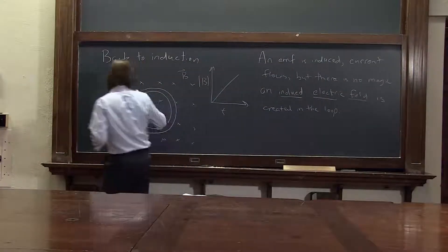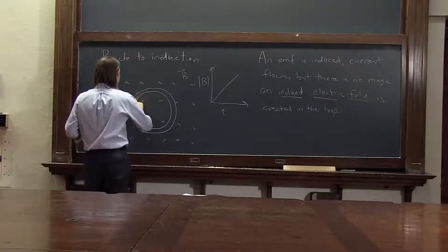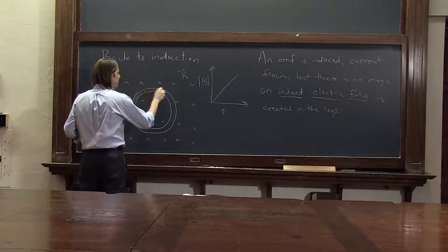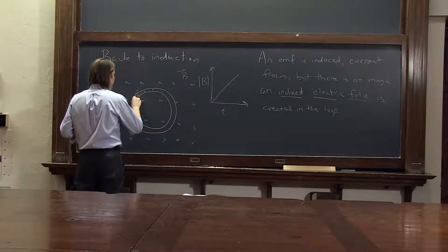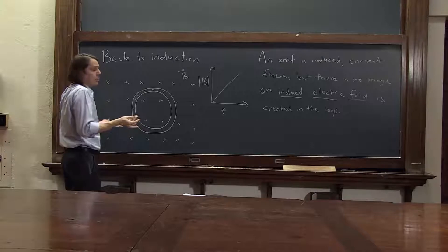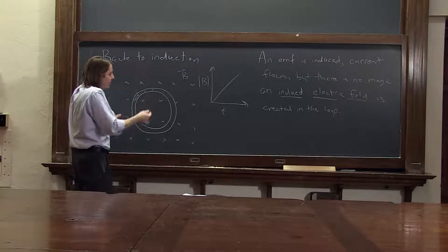If we look inside this thing, and instead of just writing an I and an arrow, we draw a bunch of little charge carriers, which we'll think of as positive. Well, the only way they're going to move is an electric field. That's the only thing that can push them.